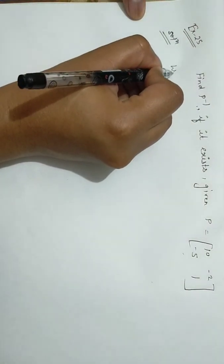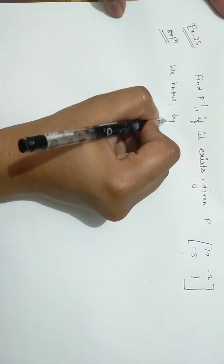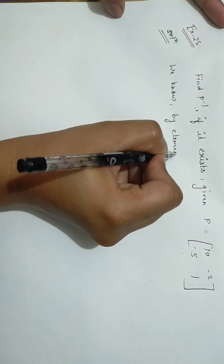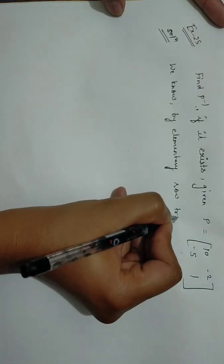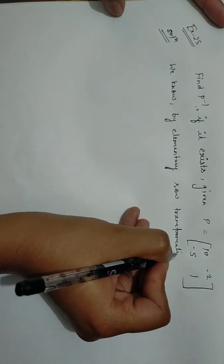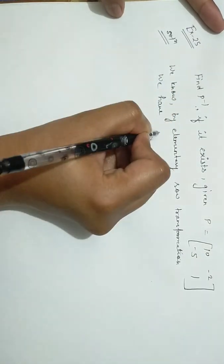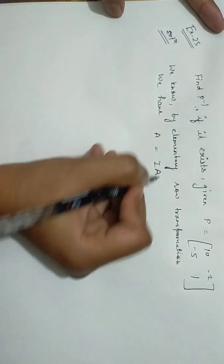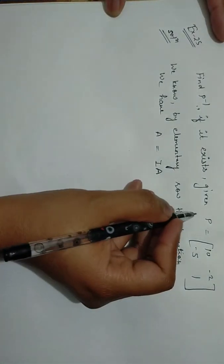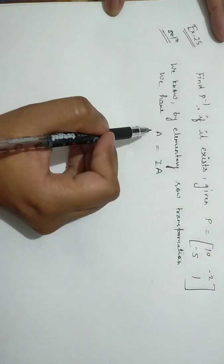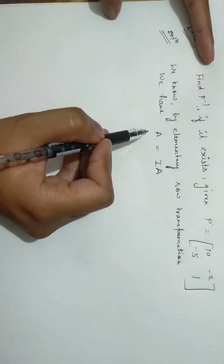By elementary row transformation, we have A equals IA. This relation we used in the last question also, so same relation we will use here. So put their value here. Particularly, P matrix is given, so I will replace A by P.